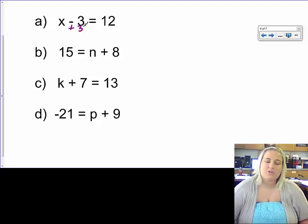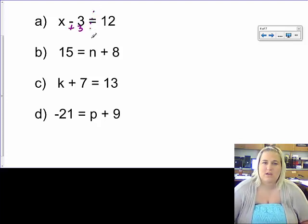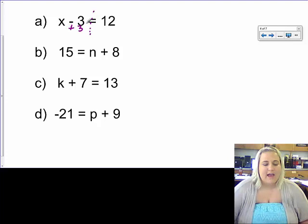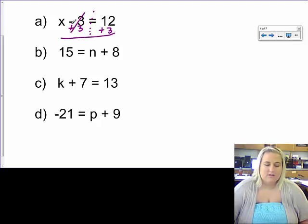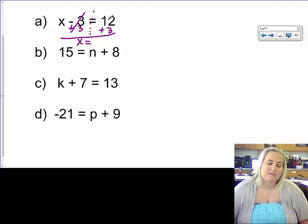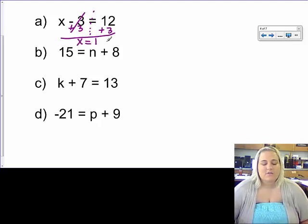And what I do to one side of the equal sign, this is my equal sign, what I do to one side I must always do to the other for it to stay true. So since I added 3 here, I'm going to add 3 over here. So 3s here will cancel out to 0. I have x. Bring my equal sign down. 12 plus 3 is 15.